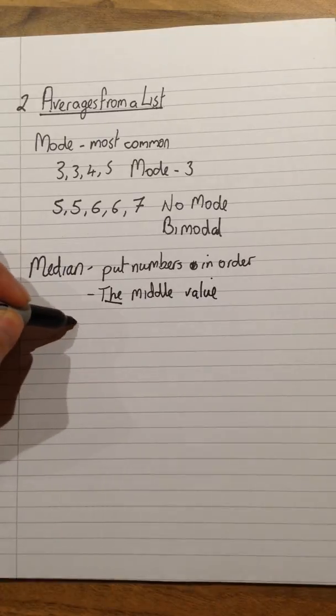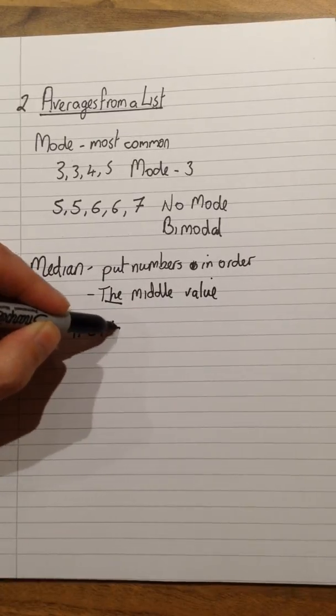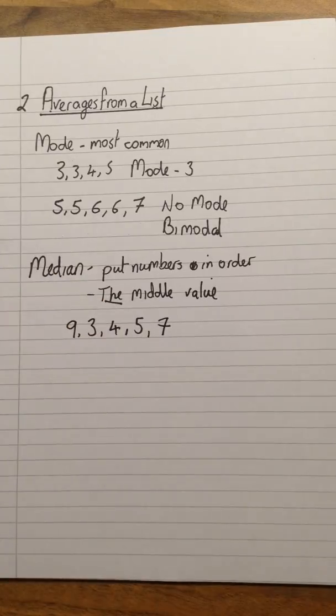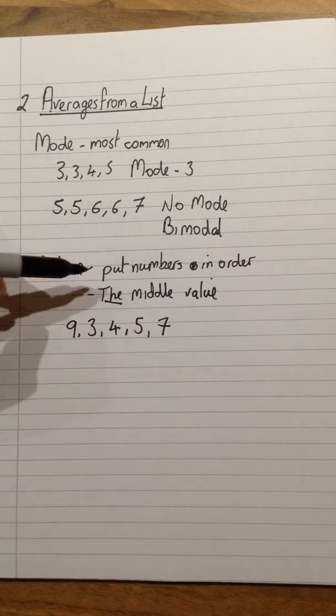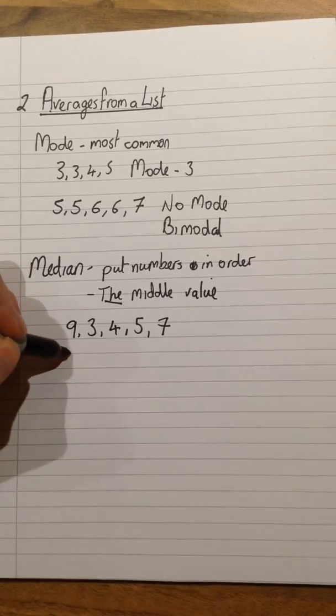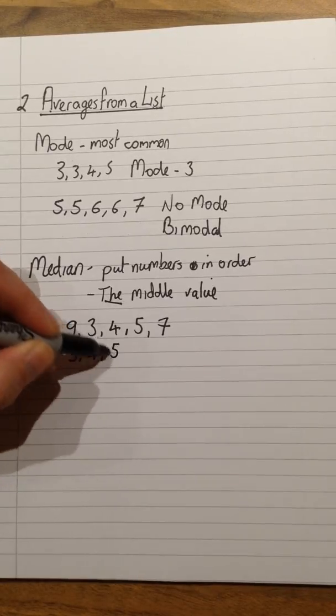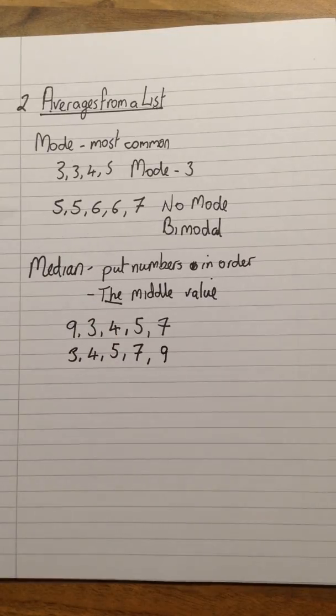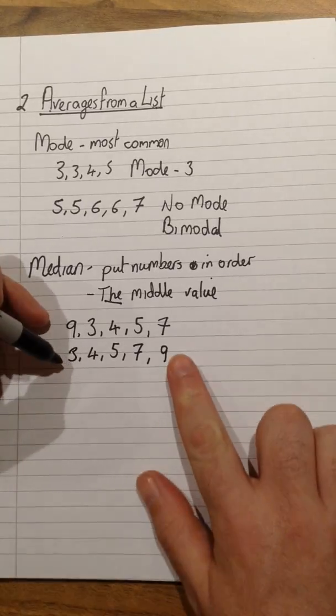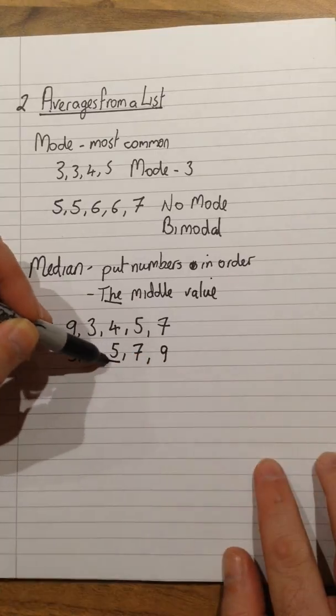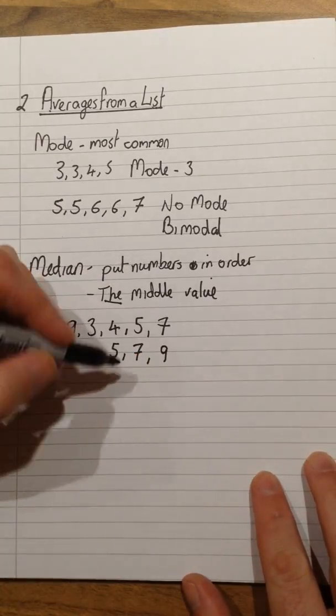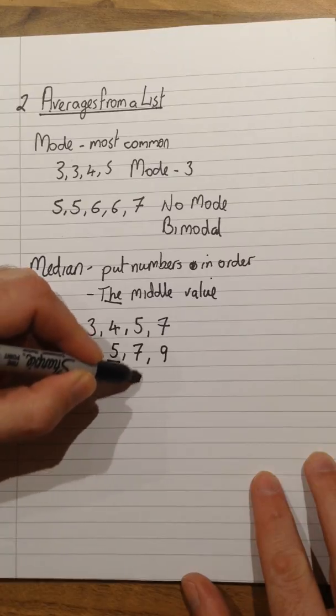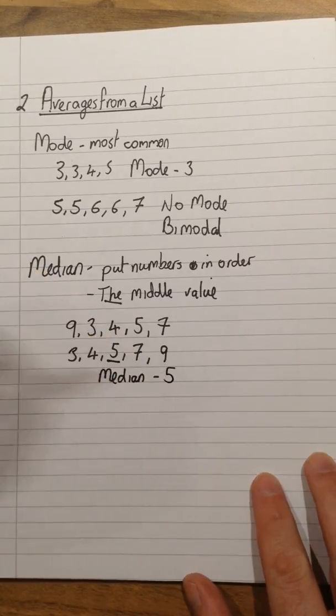So if we went for an example, so I had maybe 9, 3, 4, 5 and 7. Step number one would be to put those numbers in order. Therefore this would give me 3, 4, 5, 7 and 9. And then I would need to find the middle number. From a list, probably the quickest and easiest way is simply to count into the middle, therefore finding the median. Just like with the mode, I'd be expecting you to write median is 5, median equals 5, or something a little bit more than just circling your answer.